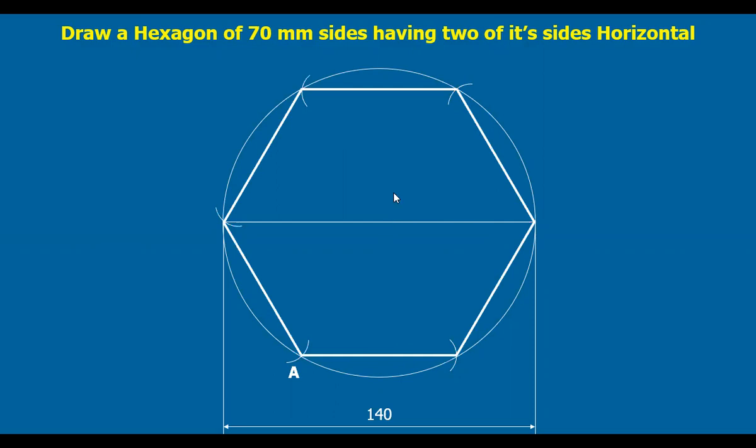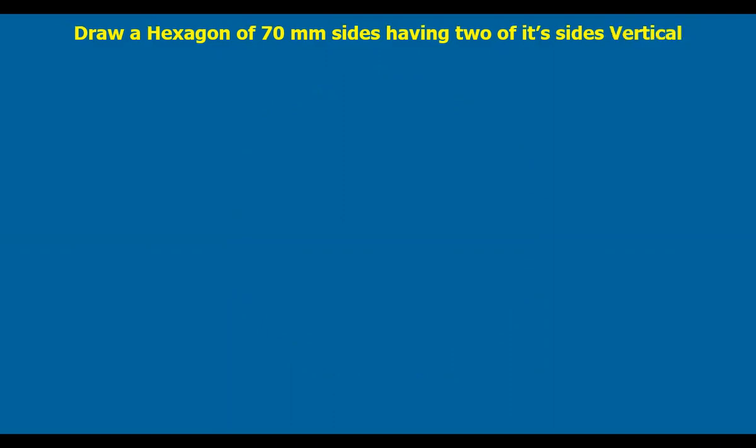Now suppose you can mark them and give dimensioning. Suppose I want to have a hexagon with the two sides vertical.